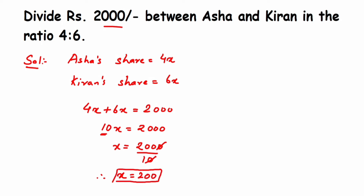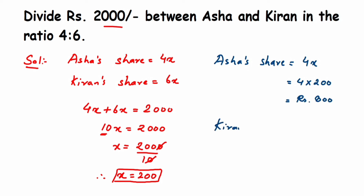This answer is not yet over — we have to find the individual shares. Asha's share is 4x, so Asha's share equals 4 into 200, which is rupees 800. Kiran's share is 6x, so Kiran's share equals 6 into 200, which is rupees 1200. You can verify: 800 plus 1200 equals 2000.